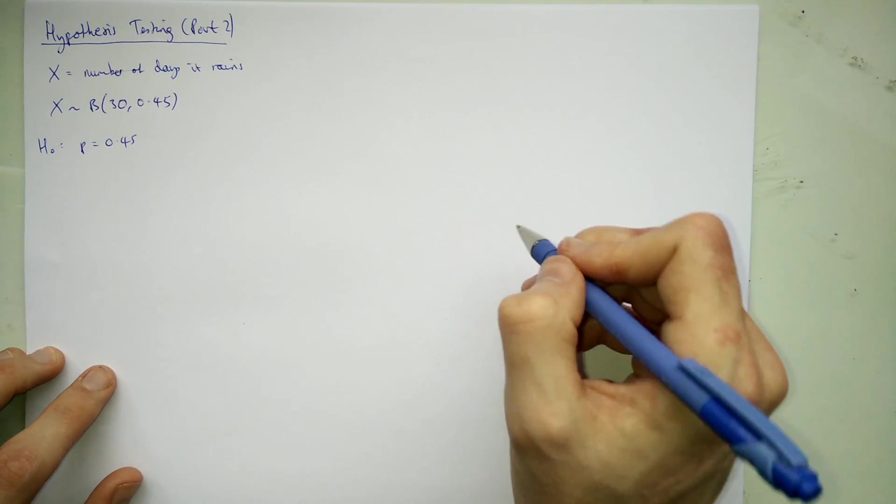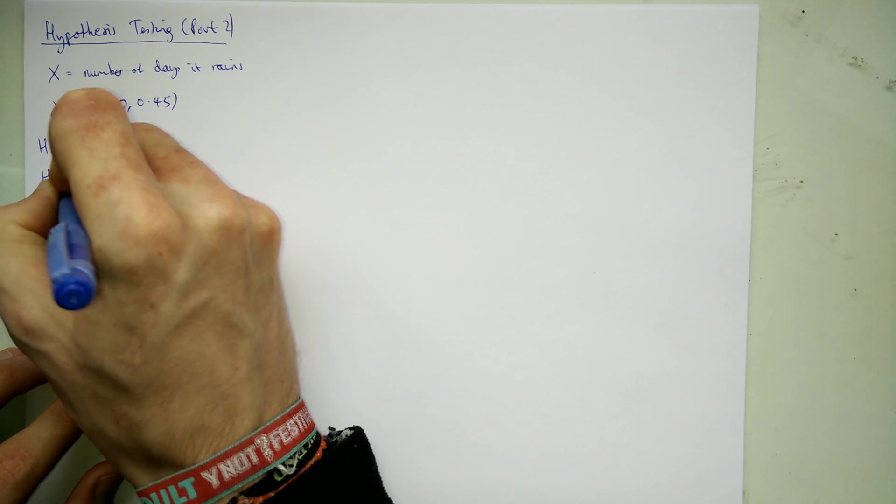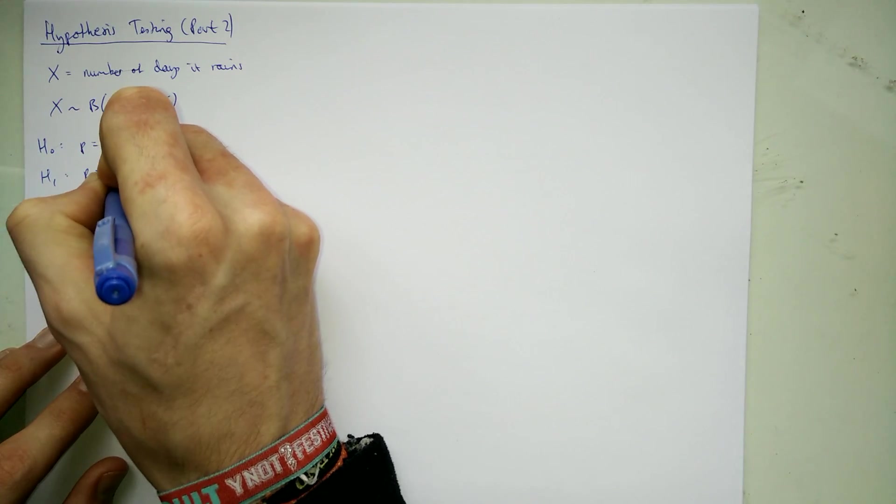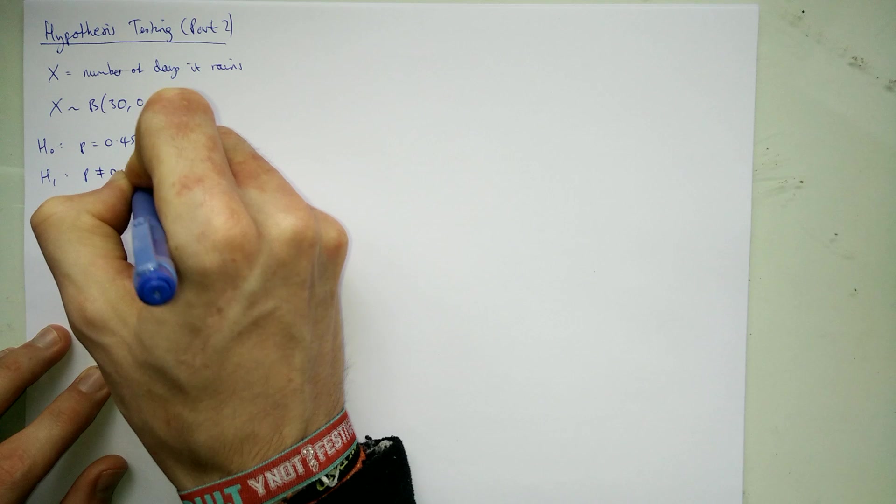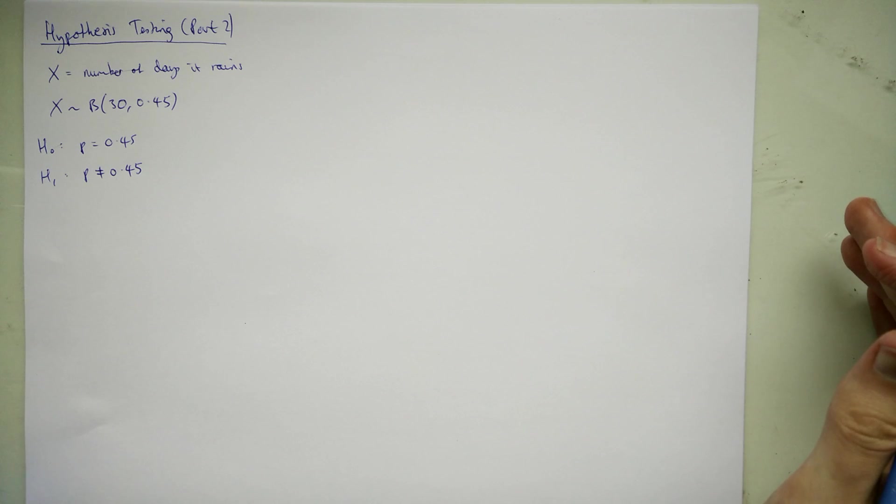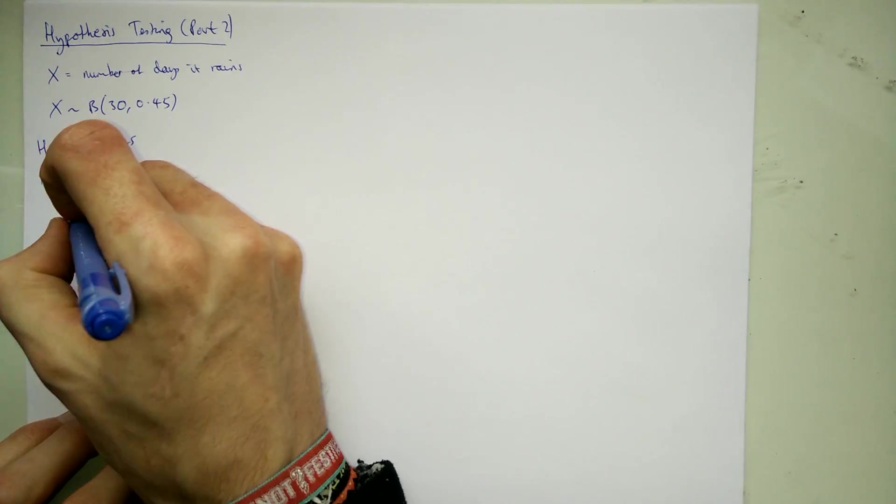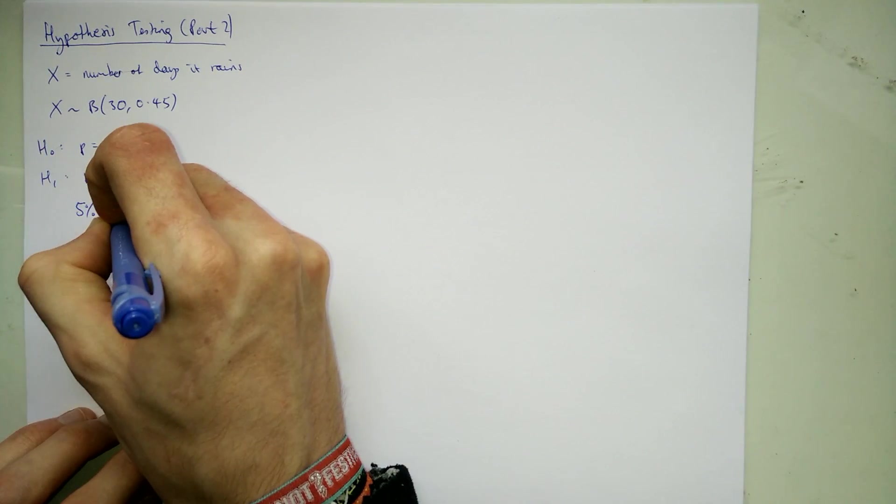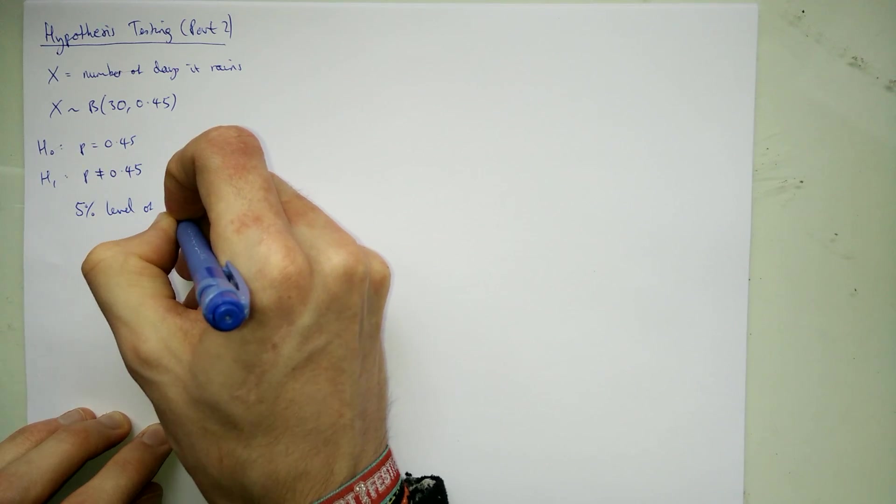So our null hypothesis is that probability is 0.45. Now we've dealt with the alternative hypothesis being bigger than and smaller than in the last video. So let's just go for it and just not being equal to 0.45. We're not sure whether it's going to be more likely or less likely than that to rain but we think maybe one of those is likely and it's more likely true. And let's do a 5% level of significance test.